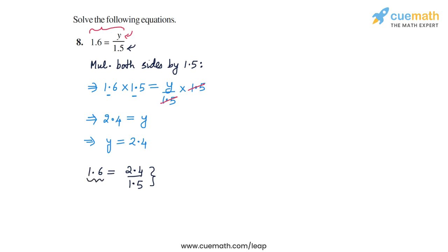Also, multiplying both sides by 1.5, we could have written it in a shorthand way. So the original equation is 1.6 is equal to y by 1.5. The way we can think about this is take this 1.5 in the denominator into the numerator on the LHS. So directly we can write 1.6 into 1.5 is equal to y.